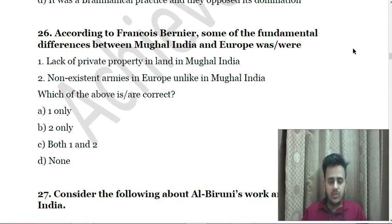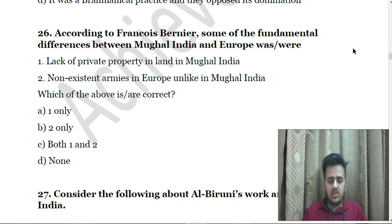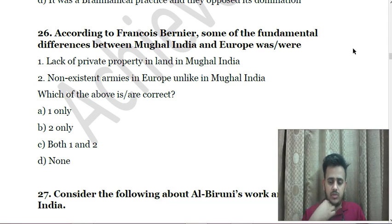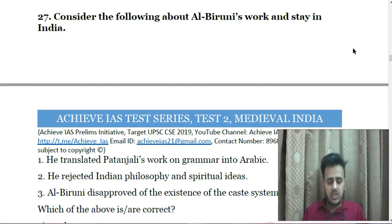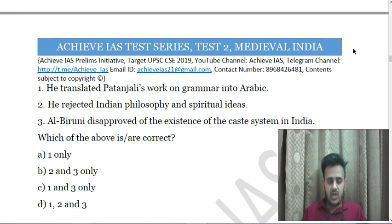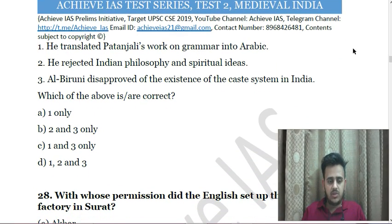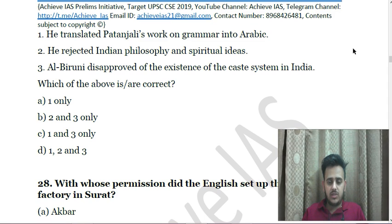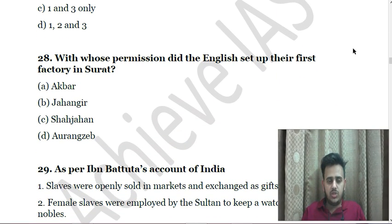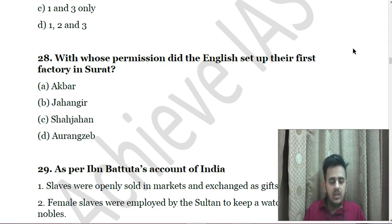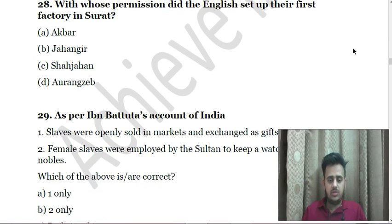Next: According to François Bernier, some fundamental differences between Mughal India and Europe were — First, lack of private property in land in Mughal India; Second, non-existent armies in Europe unlike in Mughal India. Next: Consider the following about Al-Biruni's work and stay in India — First, he translated Patanjali's work on grammar into Arabic; Second, he rejected Indian philosophy and spiritual ideas; Third, Al-Biruni disapproved of the existence of the caste system in India. Next: With whose permission did the English set up their first factory in Surat? A. Akbar, B. Jahangir, C. Shah Jahan, D. Aurangzeb.